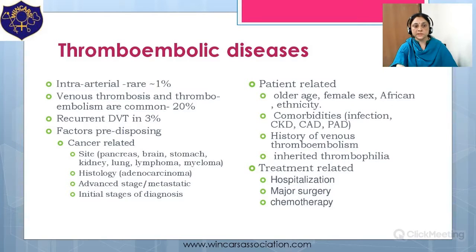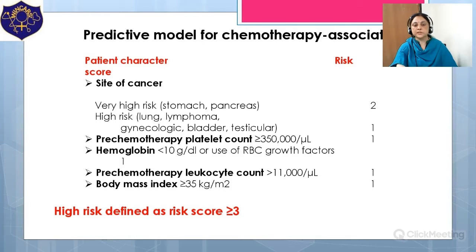Thromboembolic disease: intra-arterial thrombosis is rare; however, venous thrombosis and thromboembolism are seen in nearly 20%, with a recurrent DVT rate of 3%. Predisposing factors can be cancer-related, patient-related, or treatment-related. There is a predictive model — the Khorana score — for estimating chemotherapy-associated venous thromboembolism, considering site of cancer, pre-chemotherapy platelet count, hemoglobin, pre-chemotherapy leukocyte count, and BMI. A score of 3 or more is considered high risk.